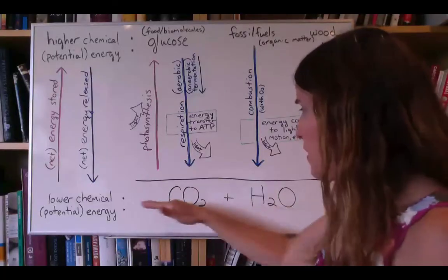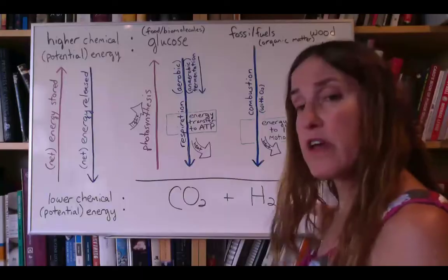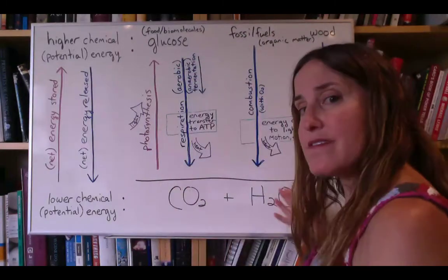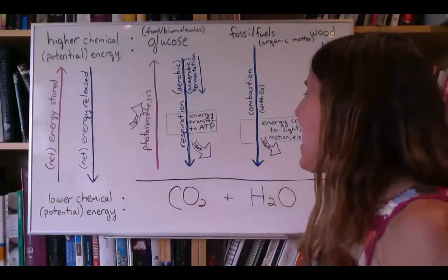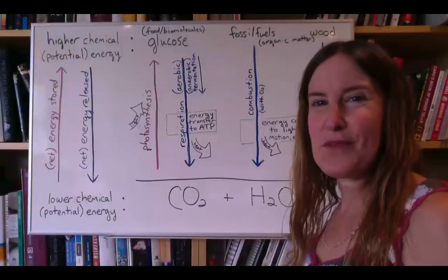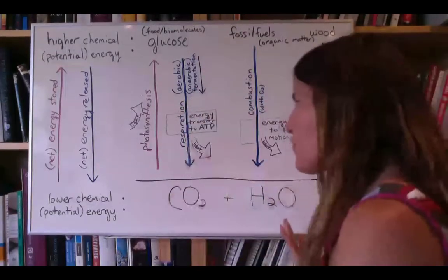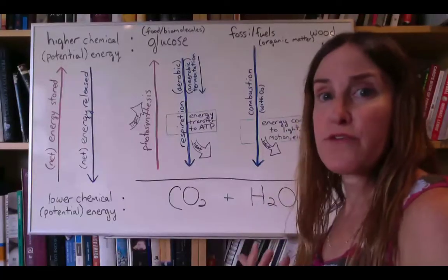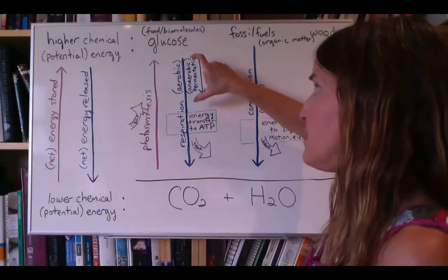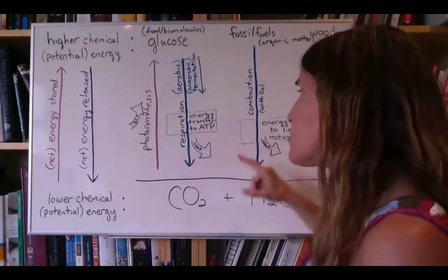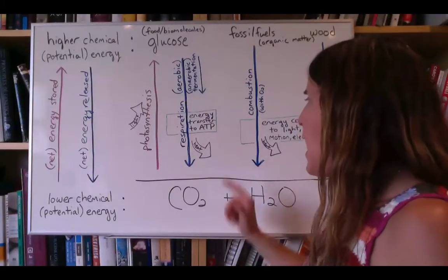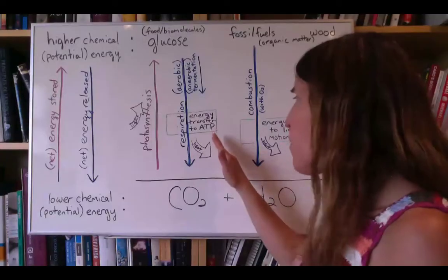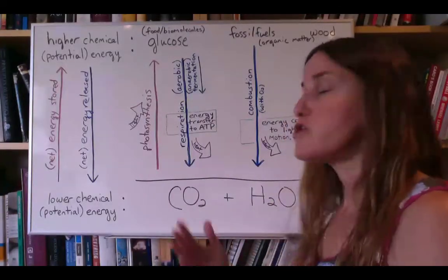We eventually produce molecules with lower chemical potential energy—carbon dioxide and water—which are excreted from our bodies. But as the molecules are being broken down, this energy is released, just like the rollercoaster going down the hill. We want to get that energy in a form that is usable—to make our muscles move or to build the molecules and structures of our bodies. A portion of the chemical potential energy in glucose and other food molecules is transferred to another molecule called ATP, which still contains chemical potential energy that is useful to us. This is the molecule we actually use to move or to build other molecules.